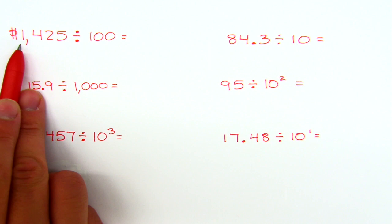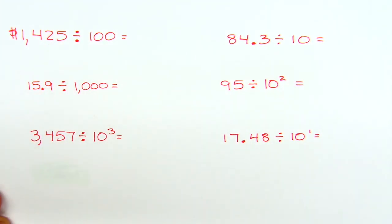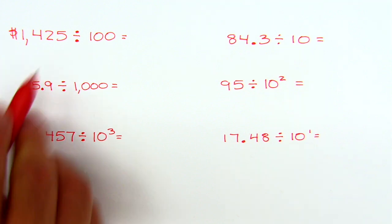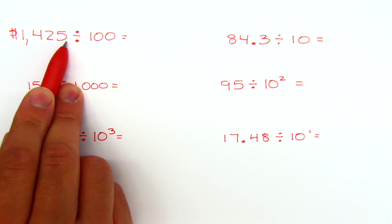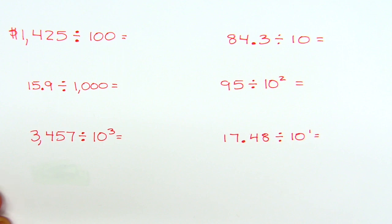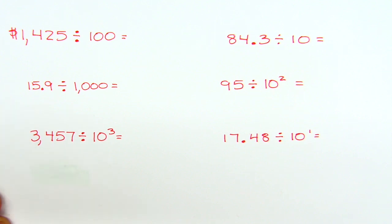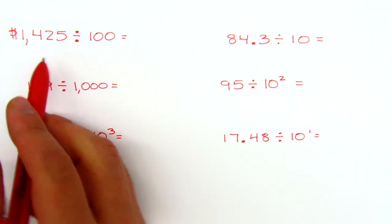So if you look at this first one, 1425 divided by 100 — at first you might say well there isn't a decimal here, but we know that every single whole number has that imaginary decimal at the end. The main thing you want to think about when dividing by a power of 10 is that when you divide by a whole number bigger than one, the number gets smaller. If you have money and you share it with friends, you're going to have less than what you started with. So dividing decreases the value of the number, and that's going to help us figure out where the decimal goes.